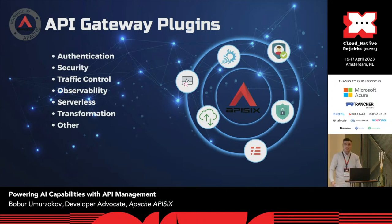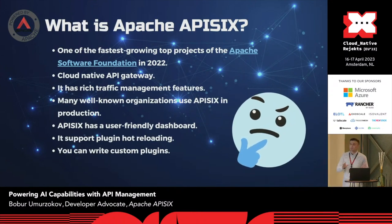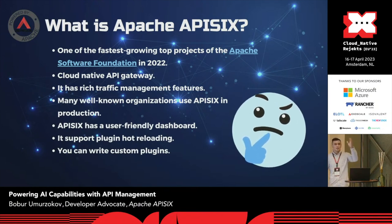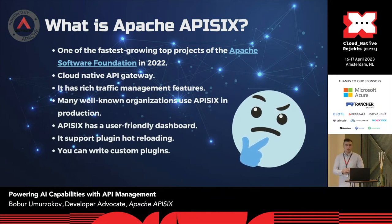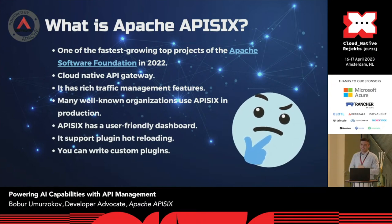There are a lot of modern API gateway features you can use, for example as an ingress controller. There are a lot of solutions in the world, but today I'm going to talk about a specific API gateway — APISIX. I'm representing APISIX because it has a nice future; it's under the Apache Software Foundation. You may already know Apache projects like Kafka, Cassandra, and Tomcat.